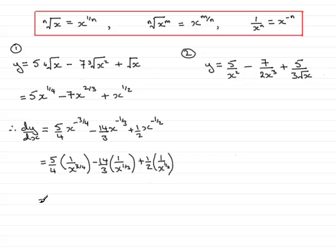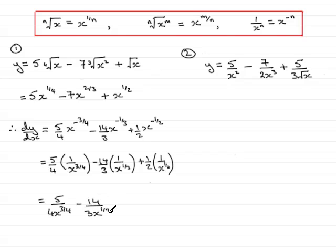Tidying this up, I now multiply out the fractions. So I have 5 times 1, which is 5, and that will be over 4 times x to the 3 quarters, so that's 4x to the 3 quarters. And I can repeat that for these next two terms and get minus 14 over 3x to the power 1 third, and plus 1 over 2x to the power half. And that brings us to the end of that particular question.